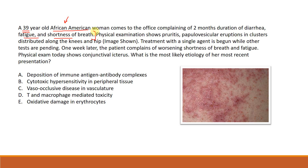Next, physical examination shows pruritic papulovesicular eruptions in clusters distributed along the knees and hips. Whenever a rash is described, distribution is one of the most important features to note. The knees and hips are extensor surfaces, and recognizing that is important because it has specific associations with certain skin diseases.